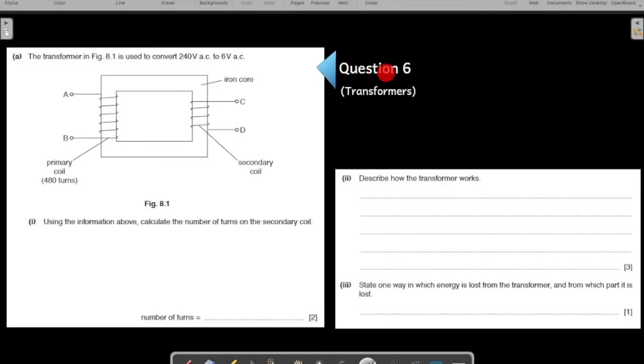Let us start with a practice question number six. This is your IGCSE past paper question and this particular question is on the topic of transformers. Right now we are practicing questions on the chapter electromagnetism.